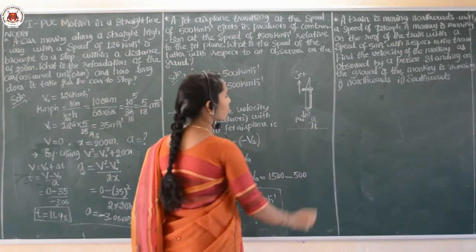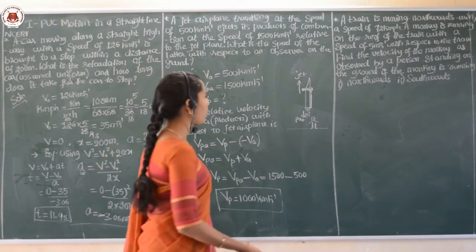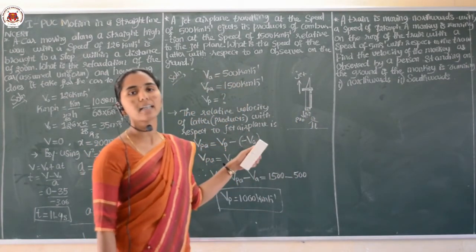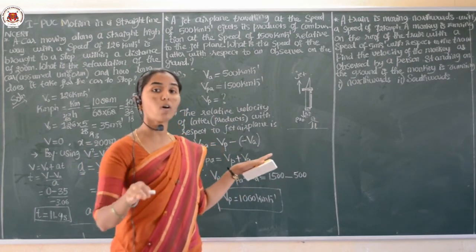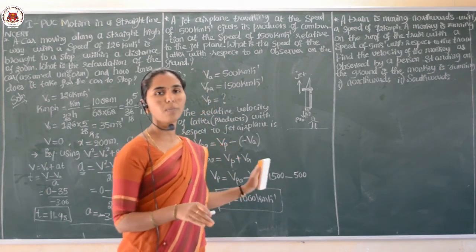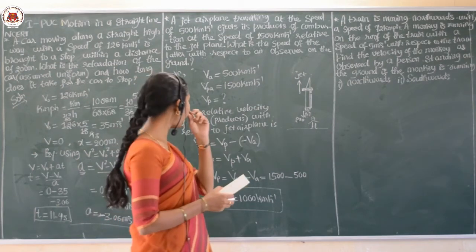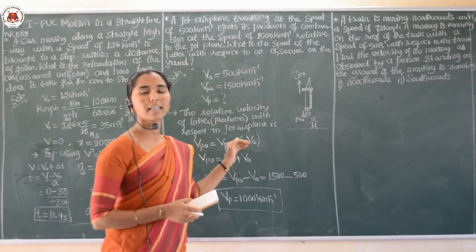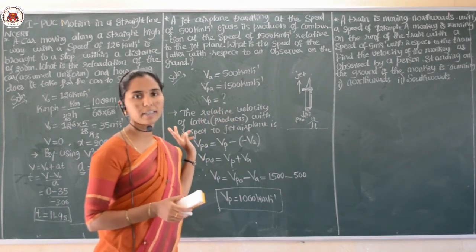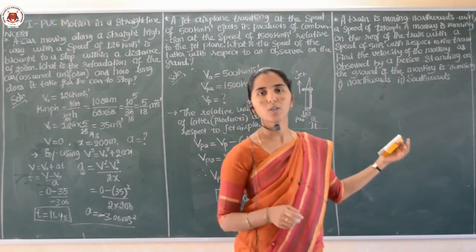The velocity of the ground is zero, and the observer is standing on the ground. Therefore, the speed of the ejected products with respect to an observer on the ground is 1000 kilometer per hour. This is the relative velocity numerical. Now let us move to the next numerical.